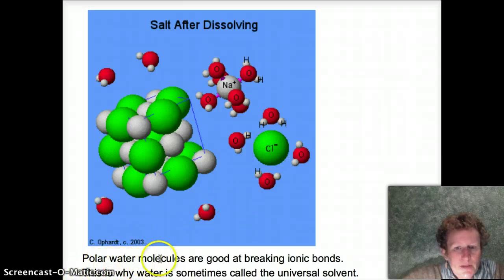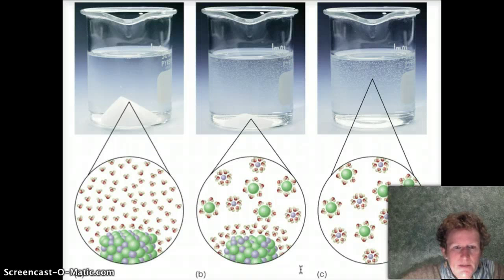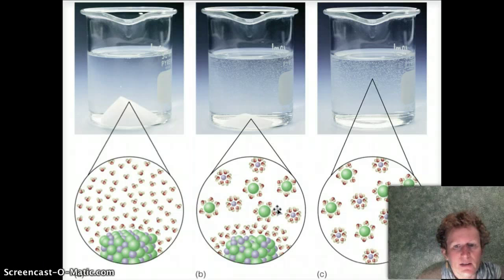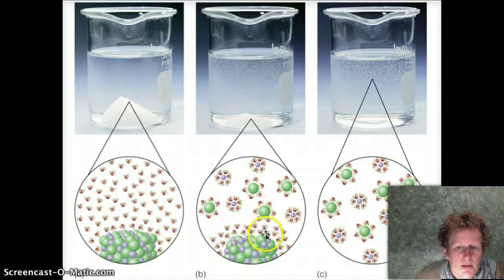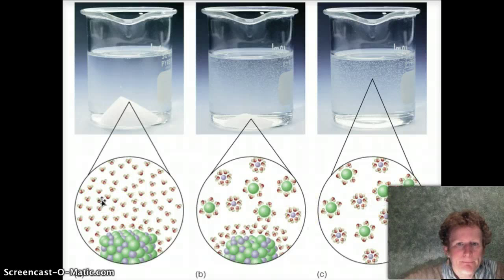This ability to dissolve ionic bonds is why water is sometimes called the universal solvent. That's very important to life because dissolved salts — like sodium chloride, potassium chloride, magnesium, and calcium — are all important for our blood and cells to maintain an electric potential. You can see how we start with salt crystals, the ions get pulled off the salt molecule and surrounded by water molecules, and eventually you have all ions floating around in solution. This is what's going on in your blood as well.